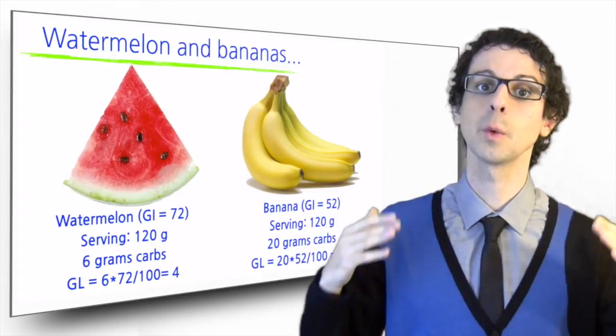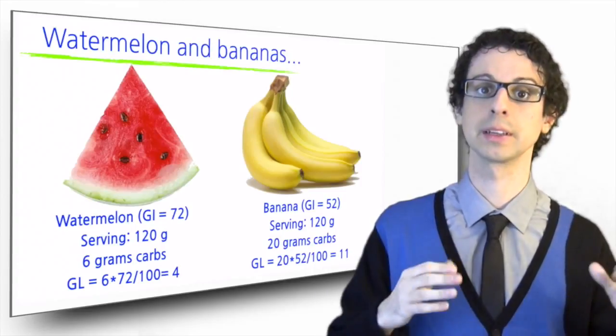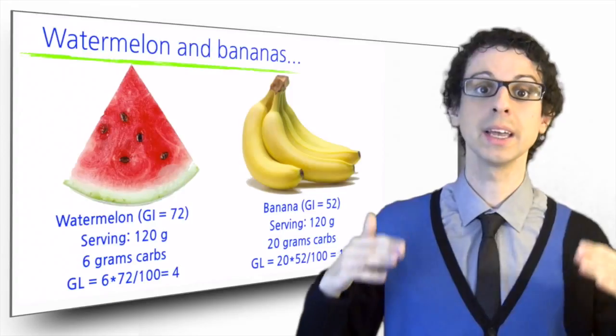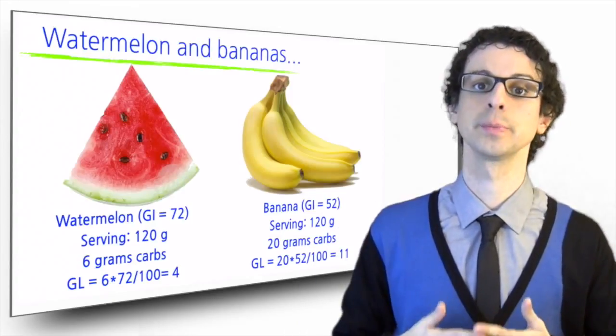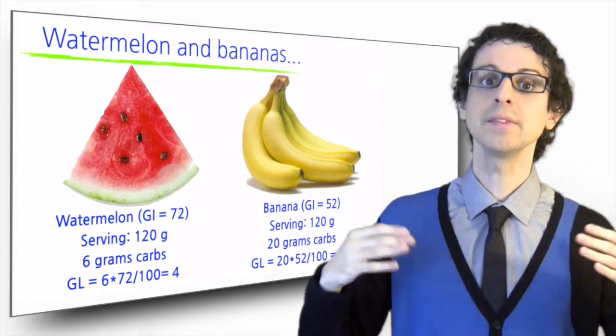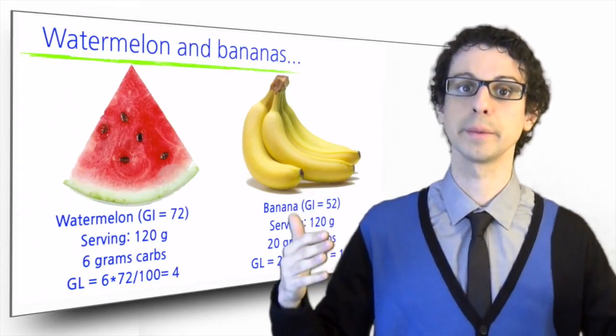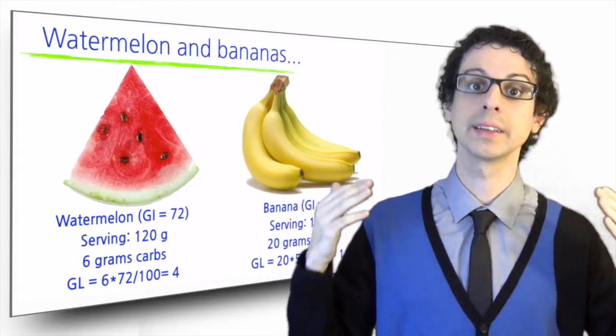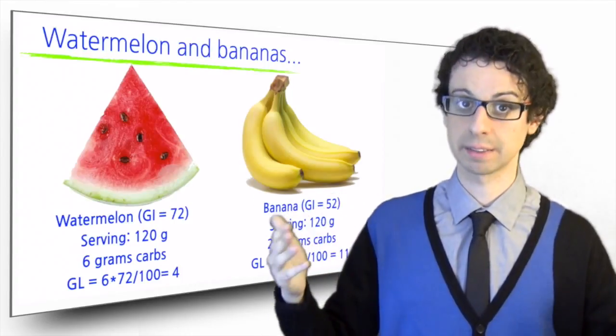Of course, the glycemic load has one big disadvantage compared to the glycemic index. The glycemic index is always the same, independent of the amount of food. The glycemic load is always based on a specific amount of food. If I eat three slices of watermelon, the glycemic load would be three times higher, while the glycemic index would still be 72.